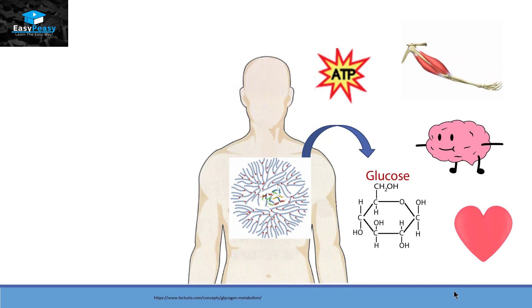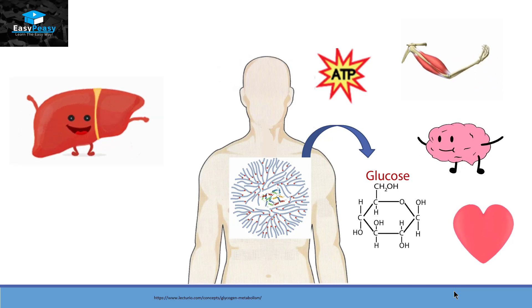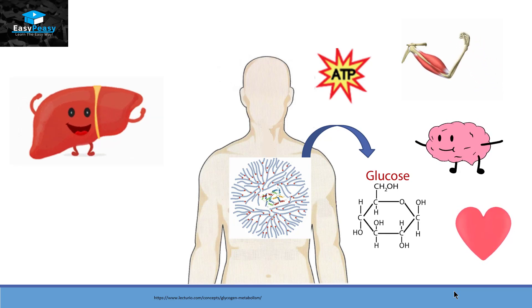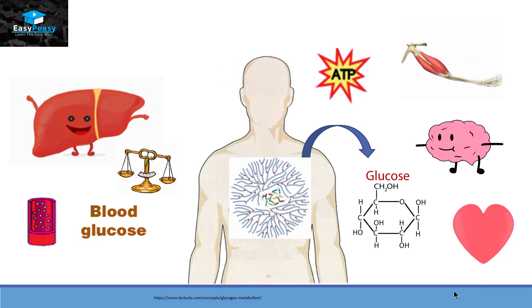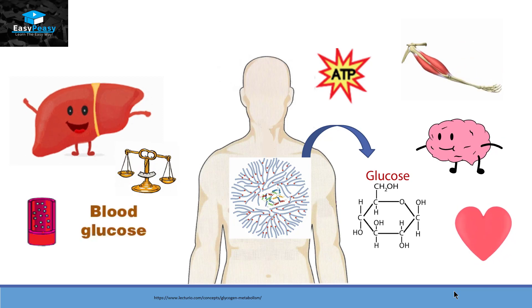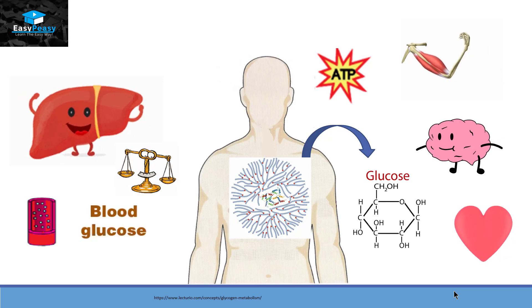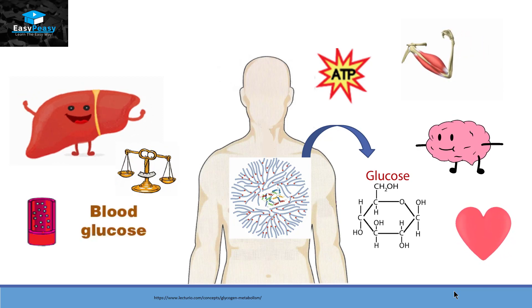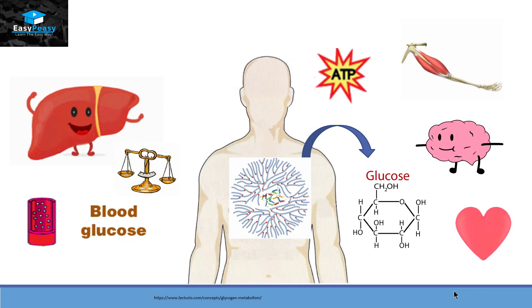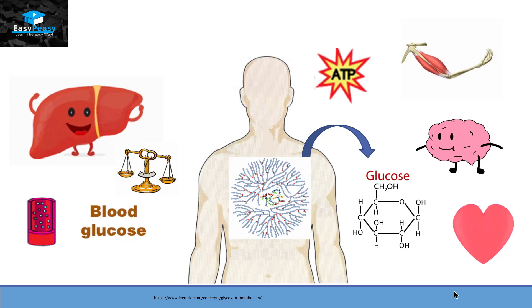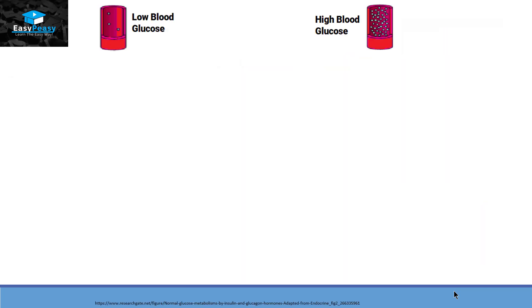On the other hand, liver cells specifically try to regulate the balance of glucose present inside our blood. So if our blood has low glucose, then the liver cell is going to convert glycogen into glucose. Inside the blood, we have two different conditions: low blood glucose and high blood glucose.